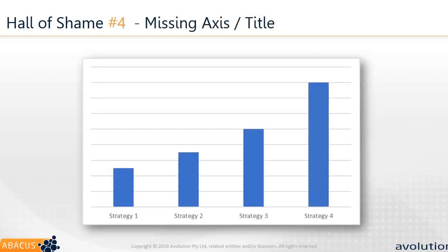Number four: missing axes. We can finally see magnitude easily, but we don't know what that magnitude is — there's no axis and no title on the chart. We can see four different strategies, but what we're measuring I don't know. That happens way too often. Every chart should tell a story; if we don't provide the context in which to interpret it, it's not going to make sense to anybody.